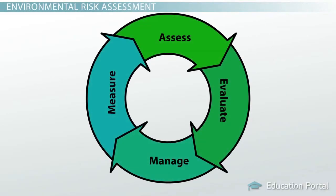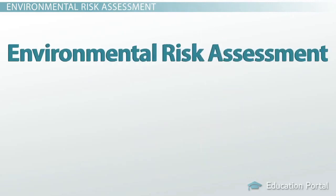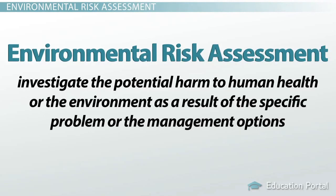The second step in the process would be to conduct an environmental risk assessment, and this would occur after the scientific assessment has found the cause of the problem and after potential solutions are determined. The environmental risk assessment would investigate the potential harm to human health or the environment as a result of the specific problem or the management options.